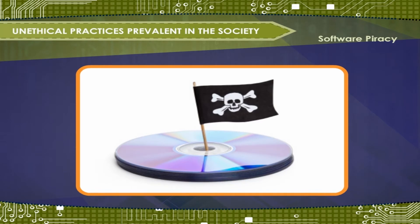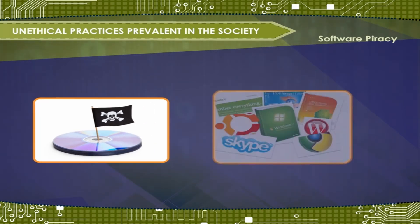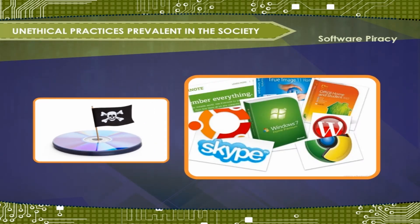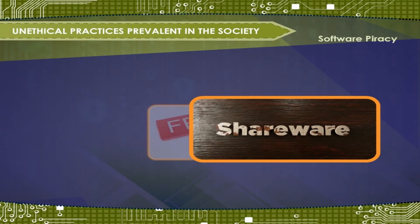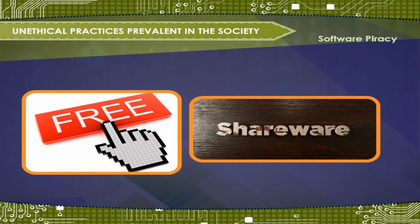Software piracy applies mainly to full-function commercial software. The time-limited or function-restricted versions of commercial software, called shareware, are less likely to be pirated since they are freely available. Similarly, freeware — a type of software that is copyrighted but freely distributed at no charge — also offers little incentive for piracy.